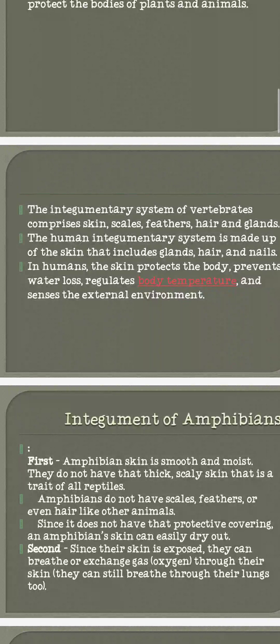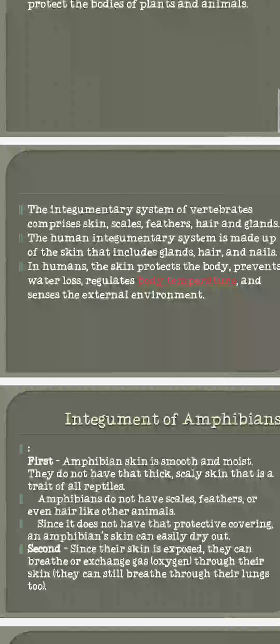The functions of the human integumentary system involve many glands, hairs, and nails. Humans have sweat glands involved in the sweating process. There are also sebaceous glands which produce sebum. Hairs are on the surface of the human skin, and nails are also part of our integumentary system.